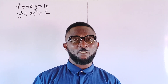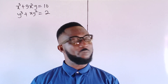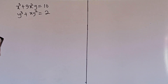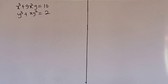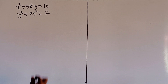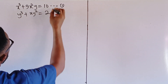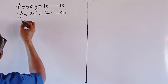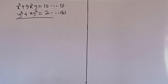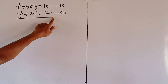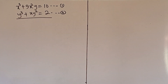Hi guys, welcome back to another interesting math video. Let's quickly take a look at this problem. I have this nice system of cubic equations from the German Math Olympiad. This problem is quite tricky, but we shall simplify it to the best of our ability. What we shall do is name these two equations — equation one and equation two — then add both equations together. Because of the nature of this problem, we shall be very systematic in the addition so that we can generate a pattern.